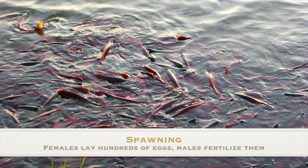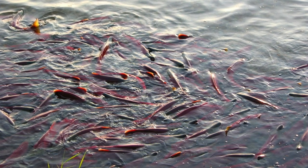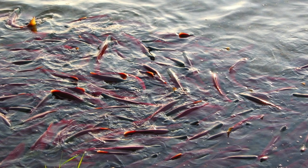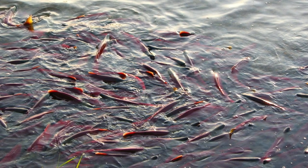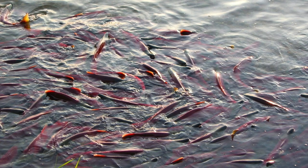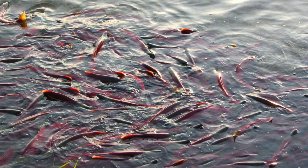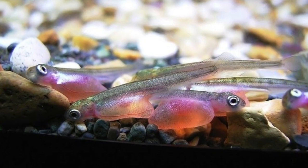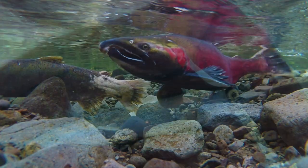Spawning is when fish gather in large groups to reproduce. Females will lay hundreds of eggs into the water and males will swim around and fertilize them. After spawning, the life cycle starts all over again.